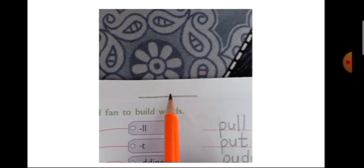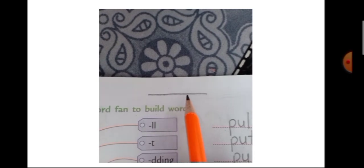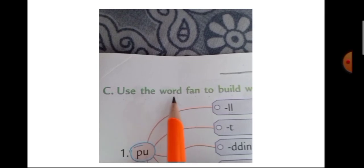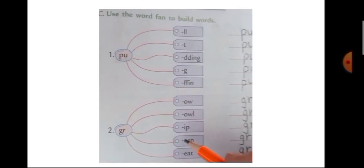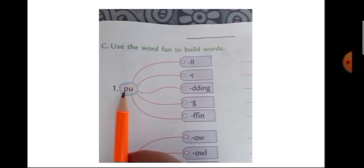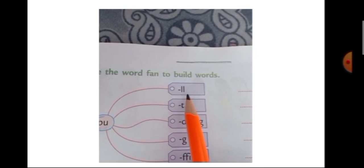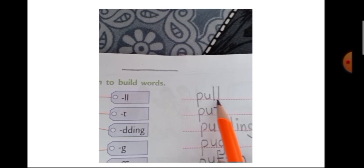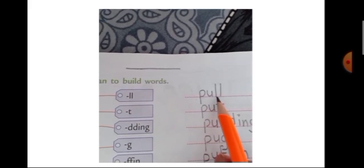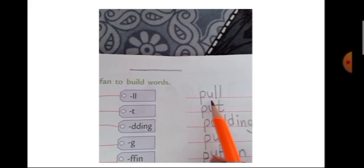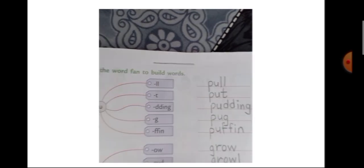Now draw a sleeping line and write today's date on it. Let us read the question: Use the word fan to build words. Now children, these are two word fans. First you have to take these two given letters P, U, and then you have to add these two given letters L, L. So P-U-L-L. Let us write here: P, U, L, L. Now which word is formed? Pull. Yes, P-U-L-L — Pull. Like this we have to build or form words from the given letters.